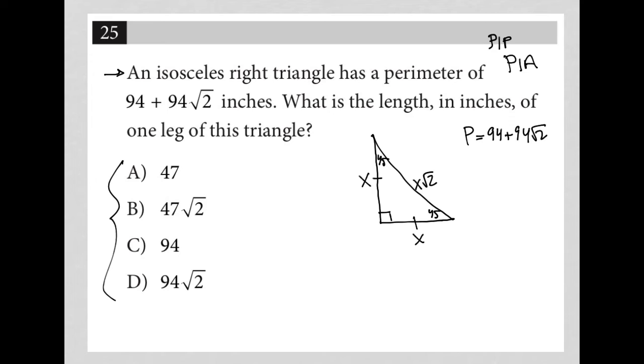It should be pretty quick because if, for instance, I said for choice A, if the legs were 47, then that would be 47. This would be 47. And this would be 47 square root 2.